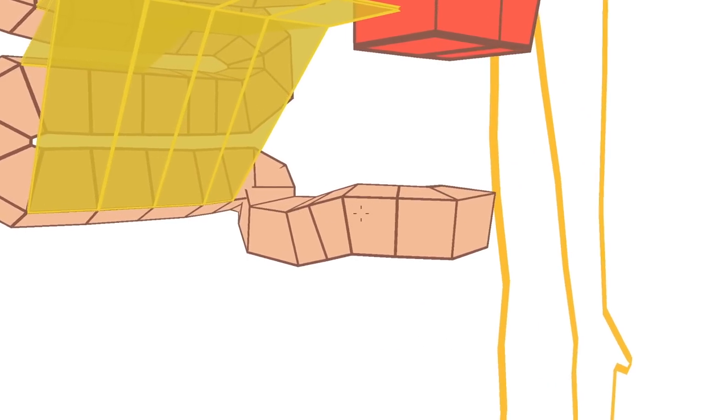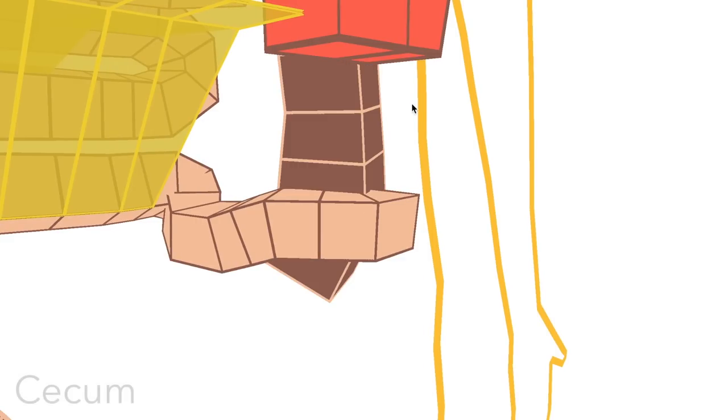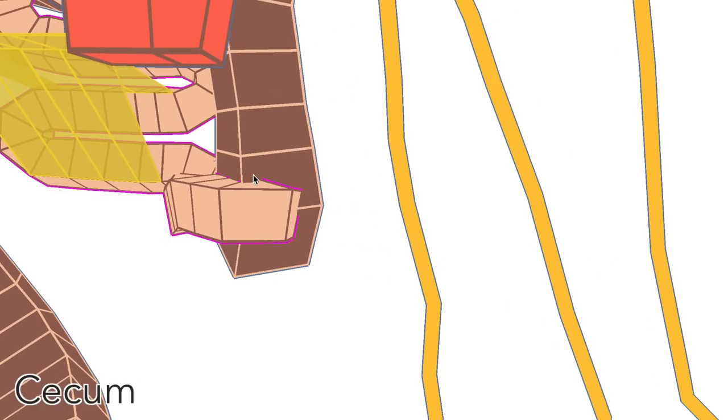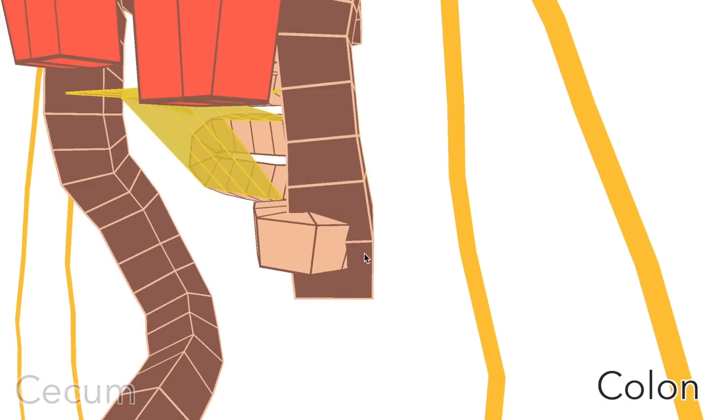The end of the small intestine then plugs into the cecum, which is the first part of the colon, or the large intestine.